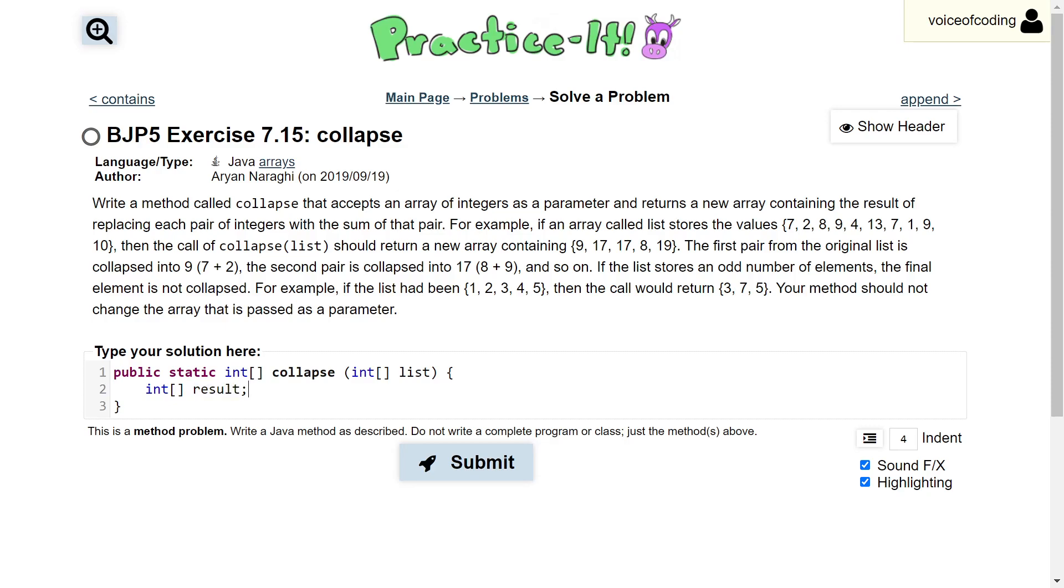For instance, if list had 8 elements, then result would only have a length of 4, whereas if list had 9 elements, then result would have a length of 5.